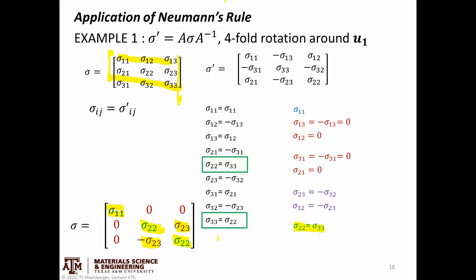This is the result of applying a single four-fold operation around u1. If I kept going and walked through the same example applying two or three four-fold rotation steps, it turns out I would constrain this matrix even further. So I'm not totally done yet — but this is just the example of the constraints that a single symmetry operation places on the property tensor.